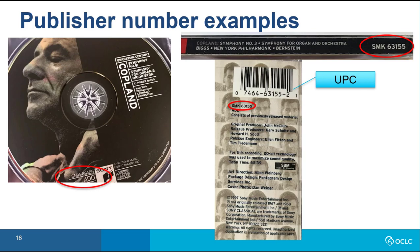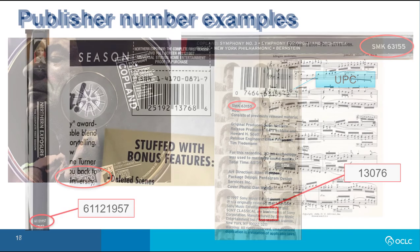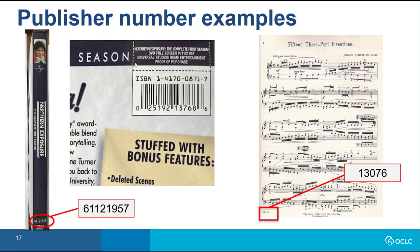You can search the UPC as a standard number, either by typing all the digits — including the small zero at the beginning and the small one at the end — or by scanning the barcode. The example on the left, from a DVD, has a publisher number on the spine of the case, and the back of the case has an ISBN and a UPC barcode. The example on the right shows a plate number, which is usually printed at the bottom of each page of notated music. For searching, you might want to combine this with the title, the composer or arranger name, or publisher.